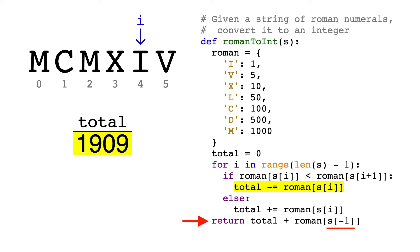The index of negative 1 is something you can do in Python to access the last character in a string. We do this because we know that the last character has to be added no matter what, since there are no more characters after it. So the last character is V, which corresponds to 5, so we'll return 1,909 plus 5, which equals 1,914 — and that's our final answer.